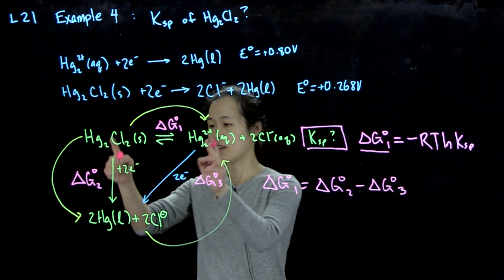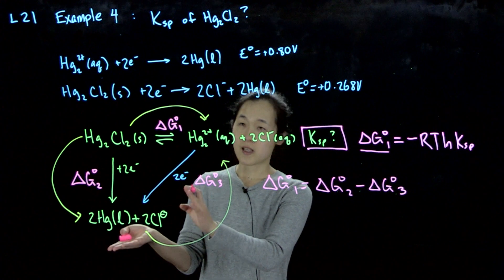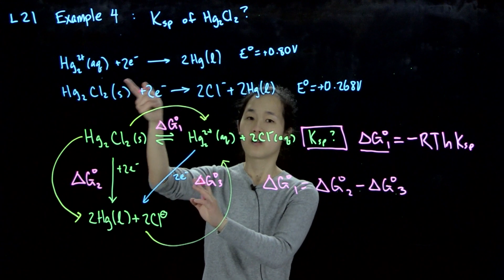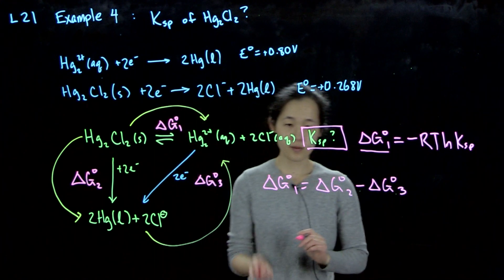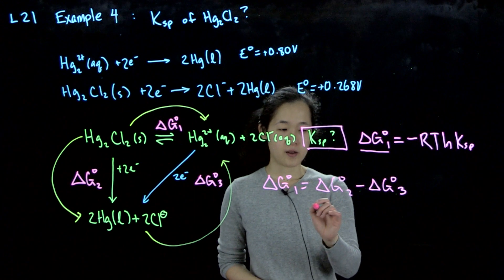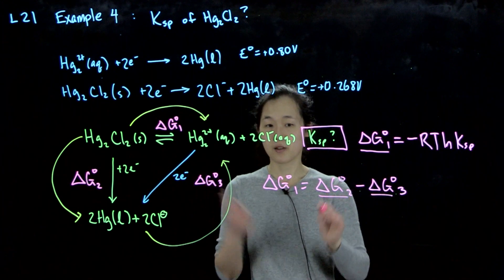The reason I've chosen the arrows to draw in this way is because we've assigned these as reduction potentials. So this is the way that we're going. And so now, we can then substitute out delta G0s for our reduction potentials.